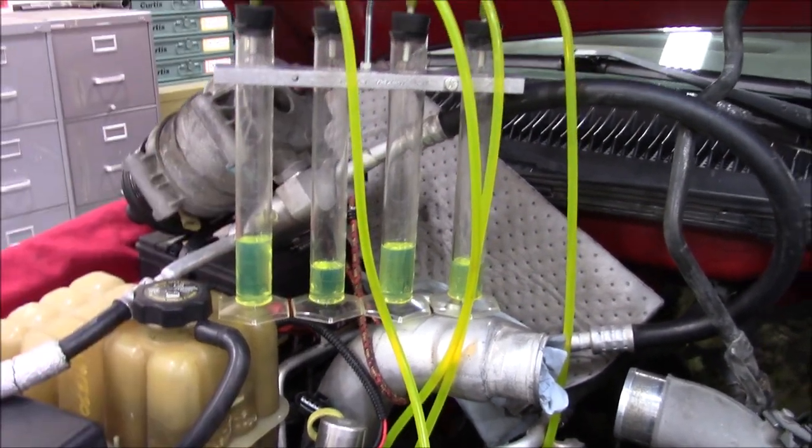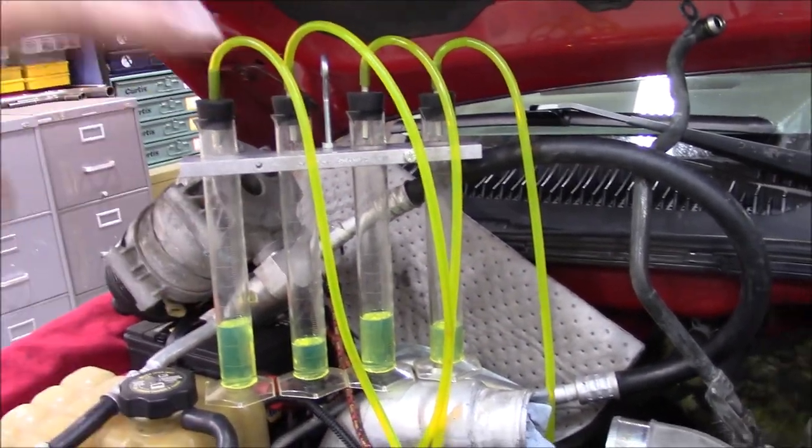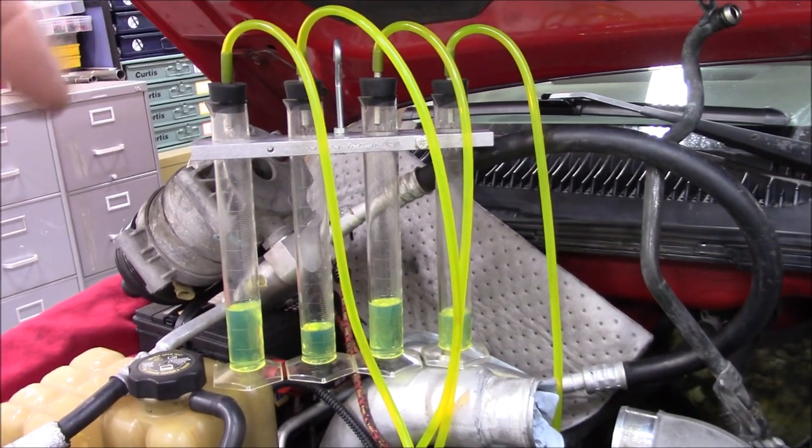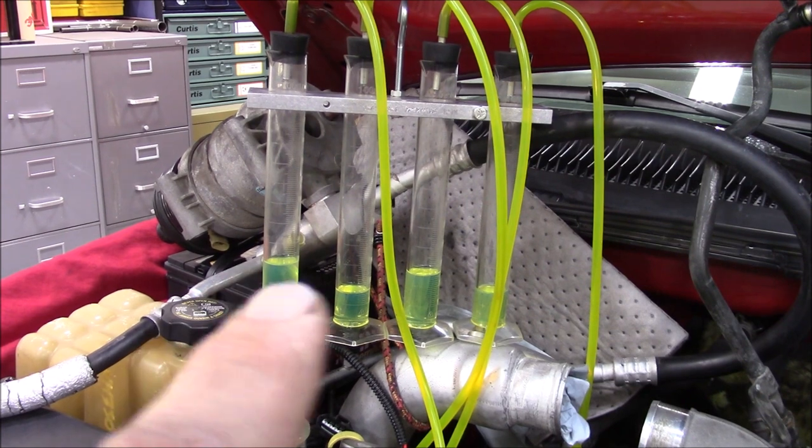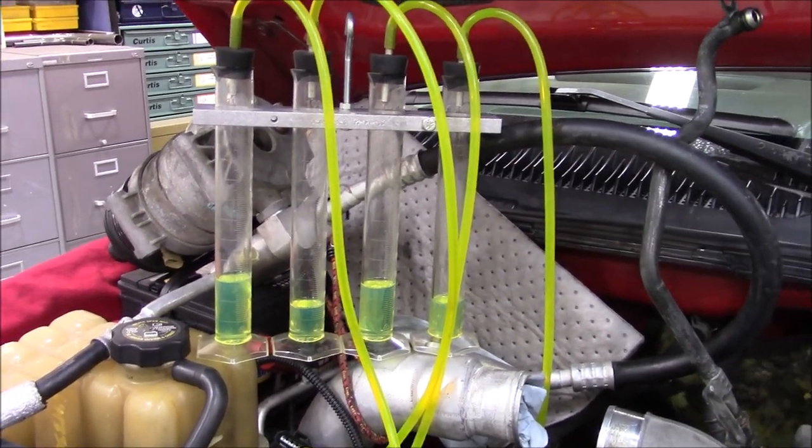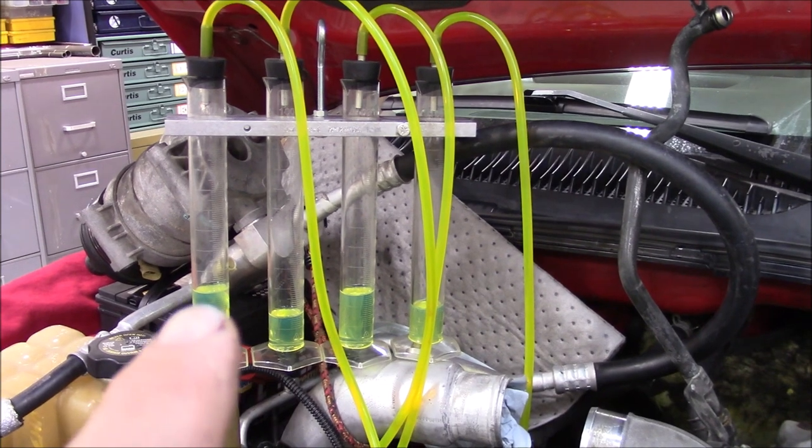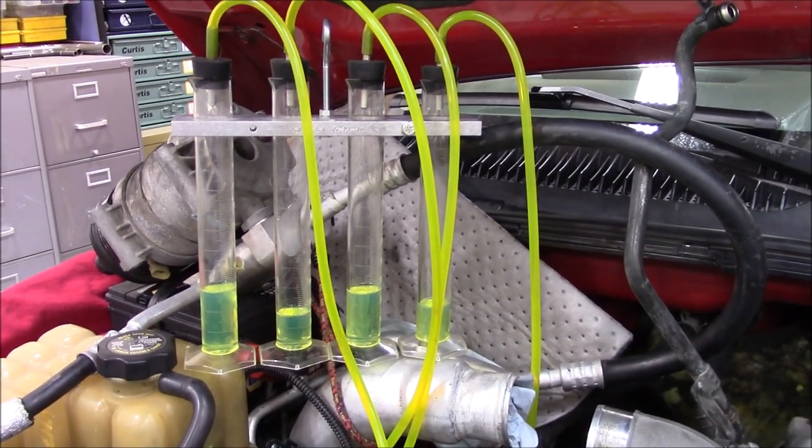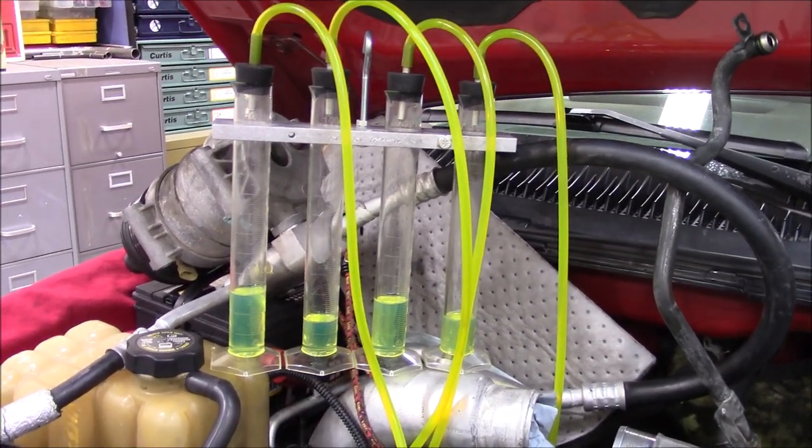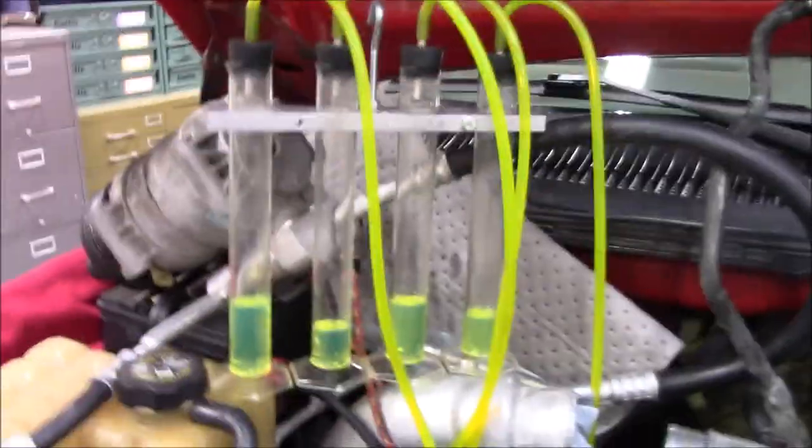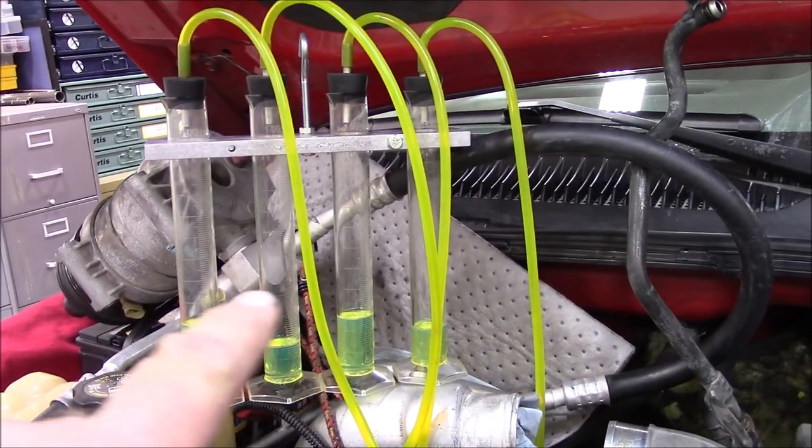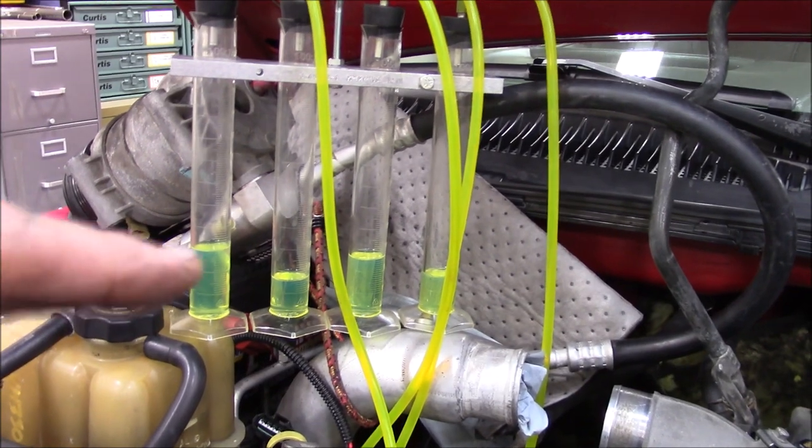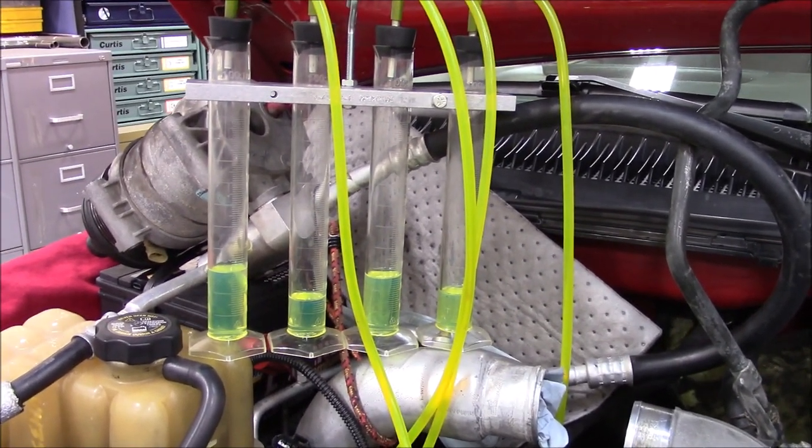And automatically we noticed one and five are flowing quite a bit more than three and seven. So those are going to be suspect right there. Okay, here we're going to crank for 15 seconds and then measure. We've already registered where the readings are, so now we're looking for a difference. Okay, go ahead and crank it. Wow, one and three are almost a steady stream.